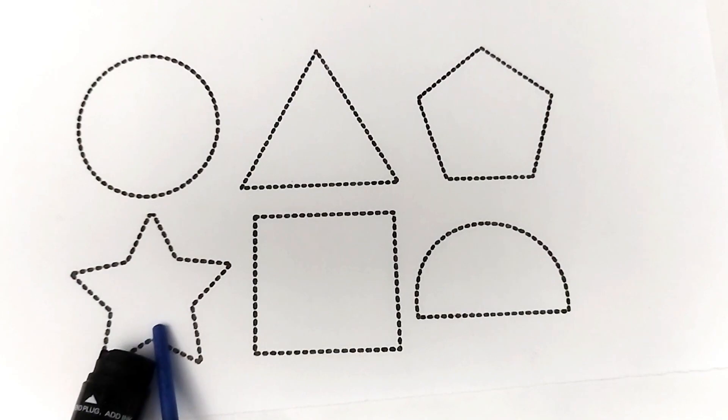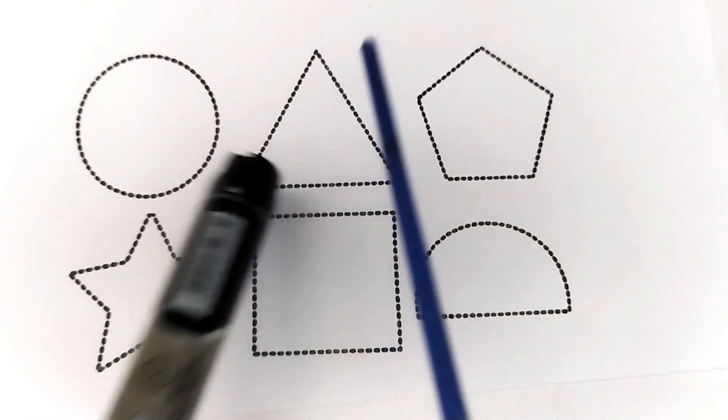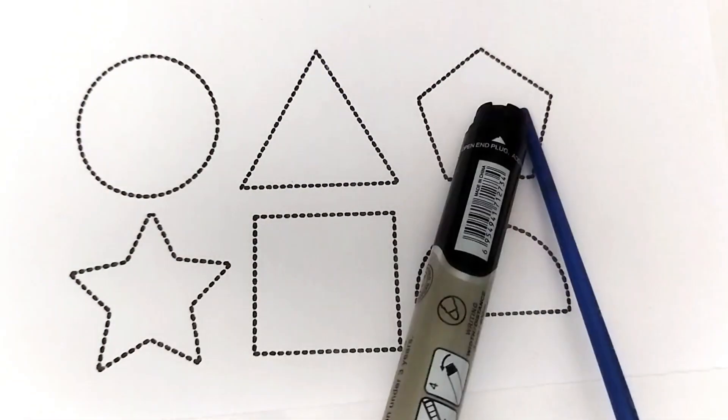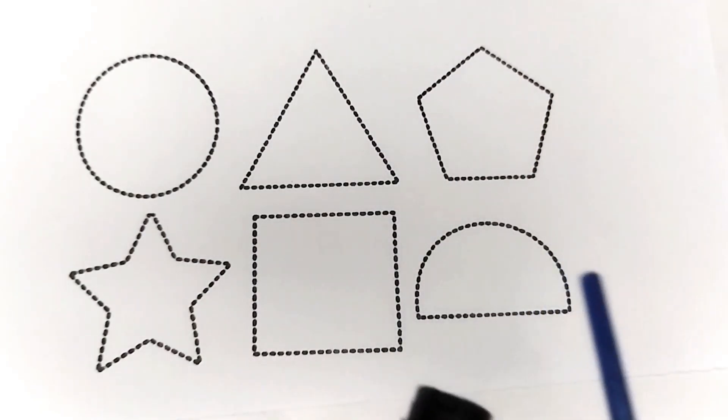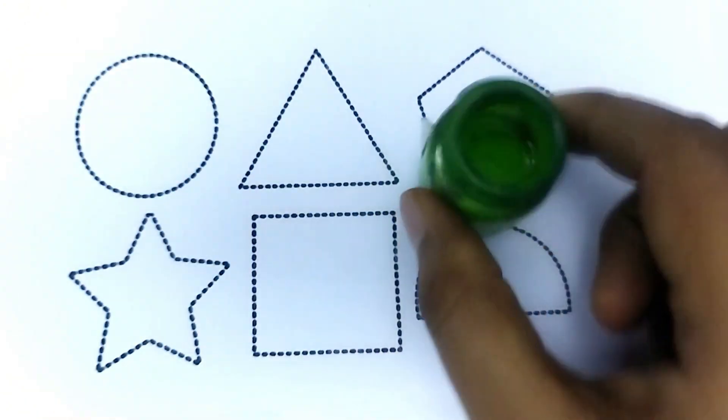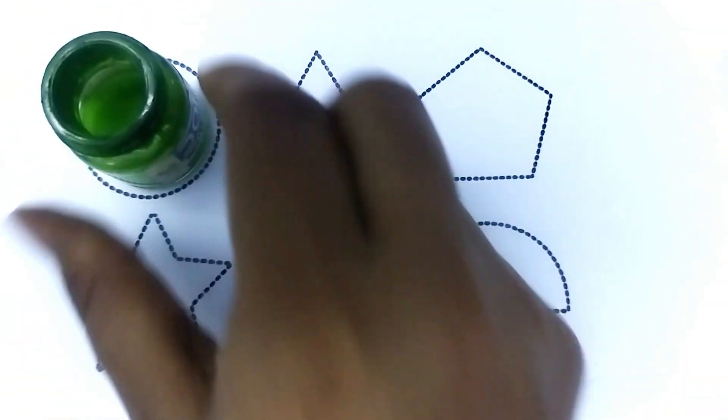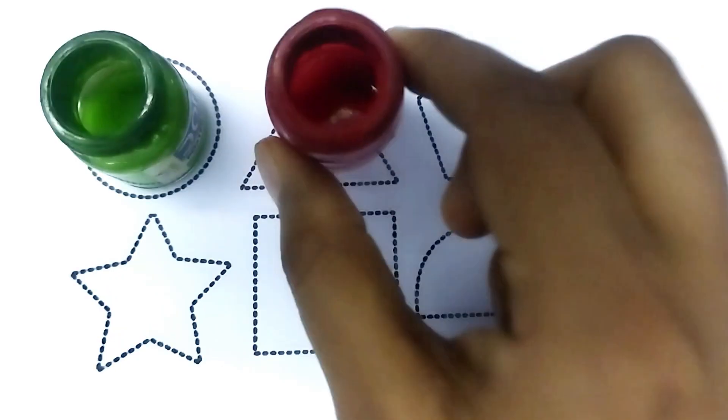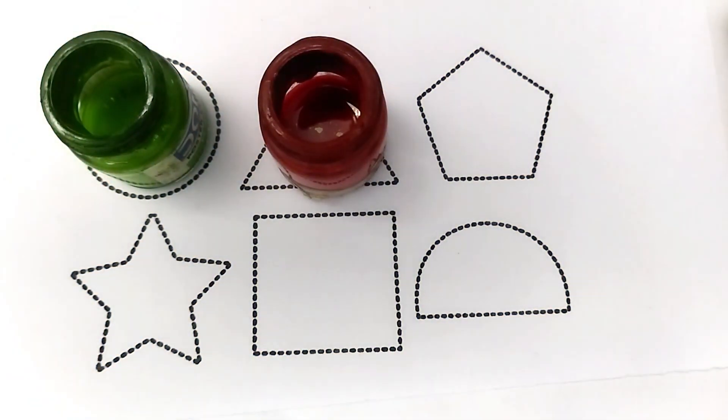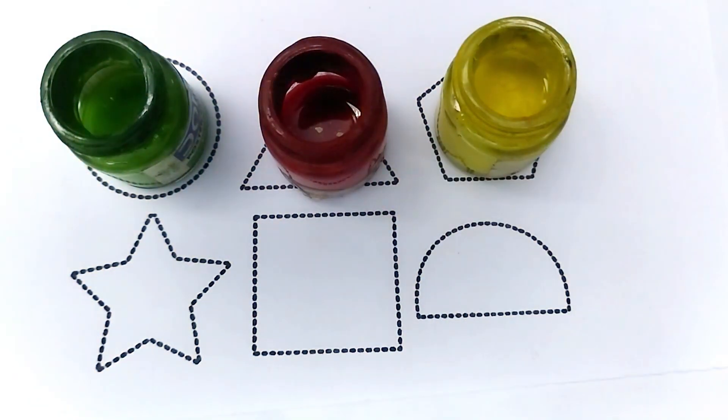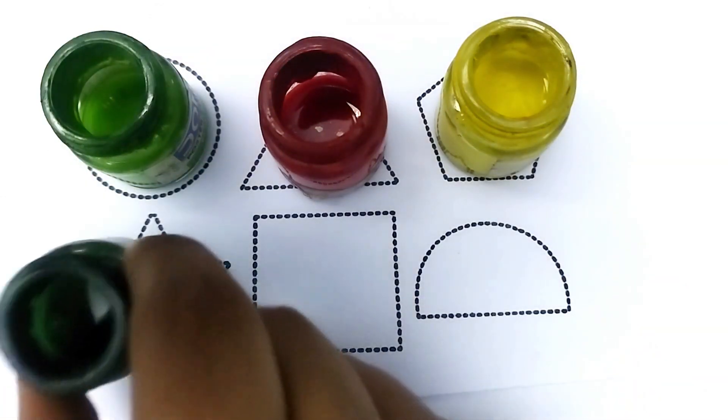Star, triangle, square, pentagon, semi circle. Colors name kids. Light green color, red color, yellow color, green color, blue color, orange color. Wow, beautiful colors.